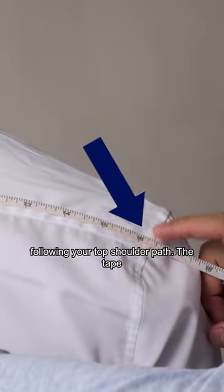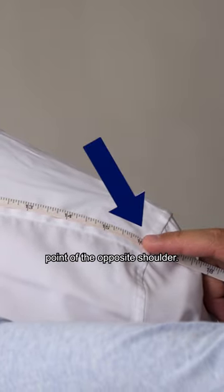The tape should end at the starting point of the opposite shoulder. You're all set! You now have your shoulder width measurement.